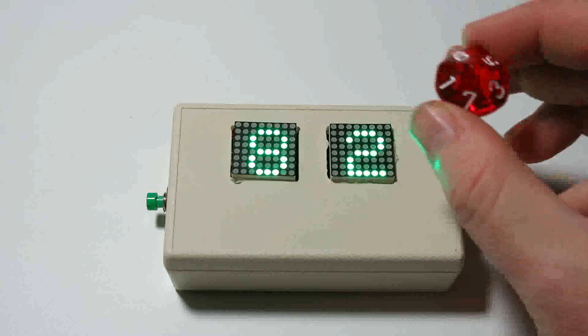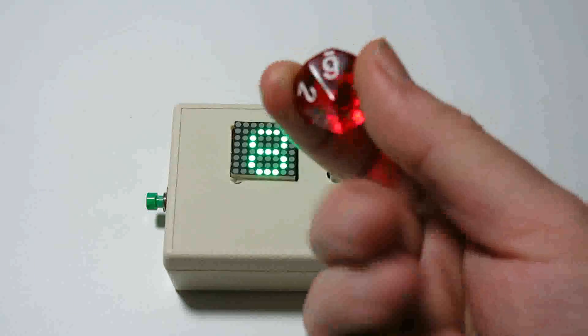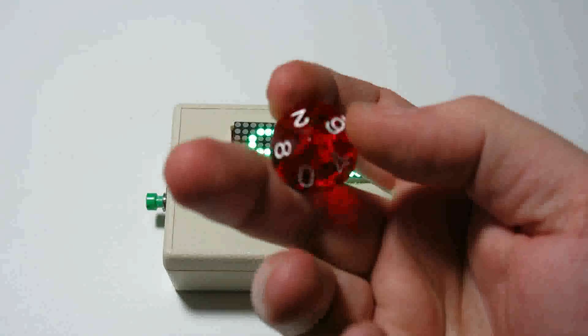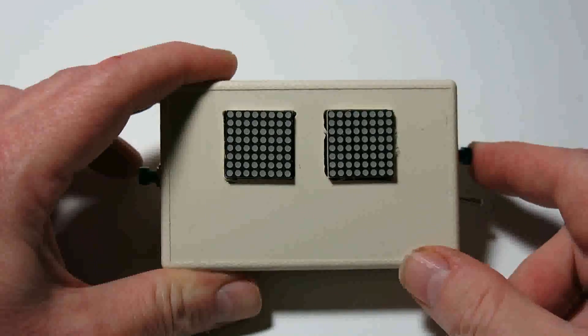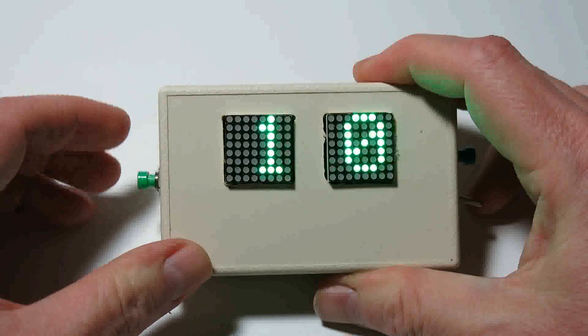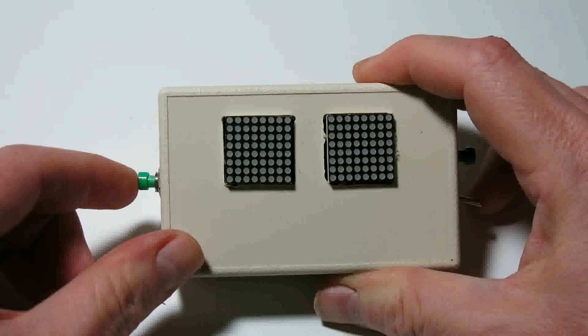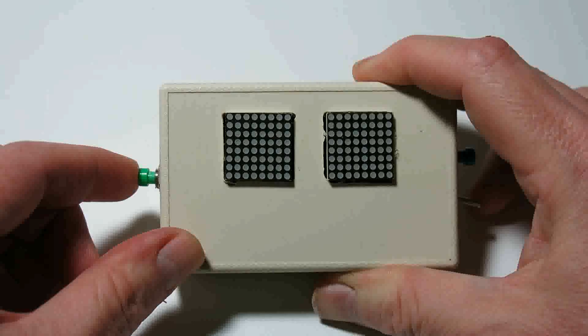The next mode after the eight-sided die is a ten-sided die. Since we only have a single digit, the ten is represented by a zero.